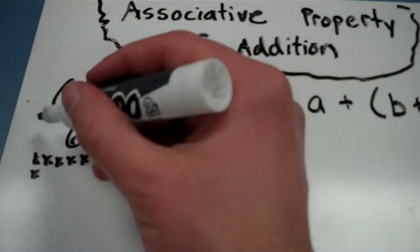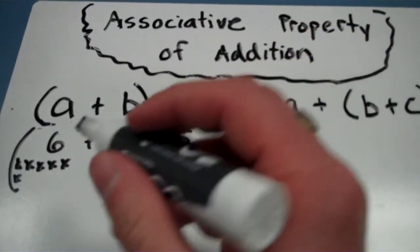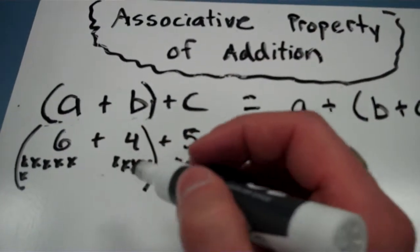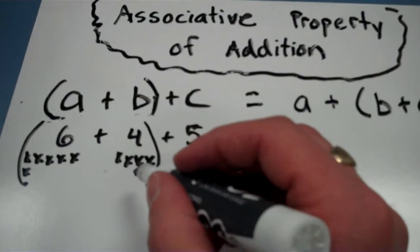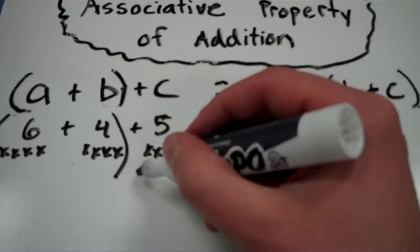Now I'm keeping these in parentheses together. And if I add the 6 and the 4 together, I will get 10. Because 6 plus 4 is 10. And then I'm going to add the extra 5, which gives us 15.